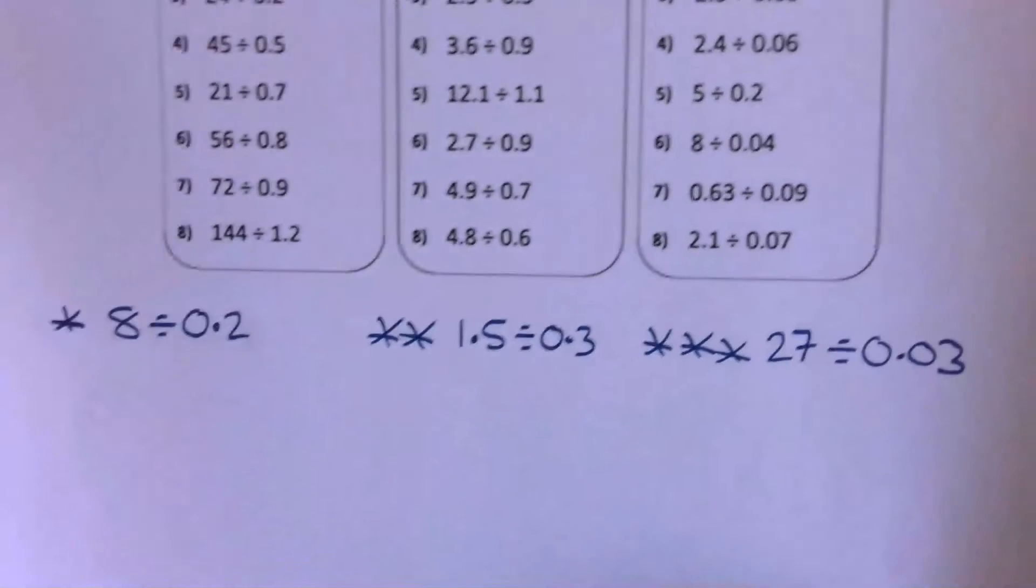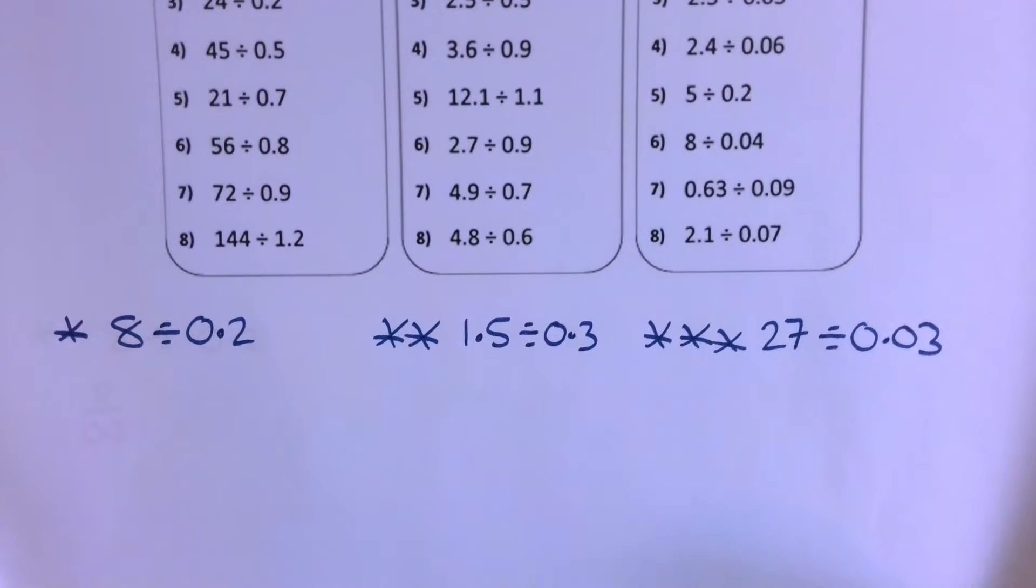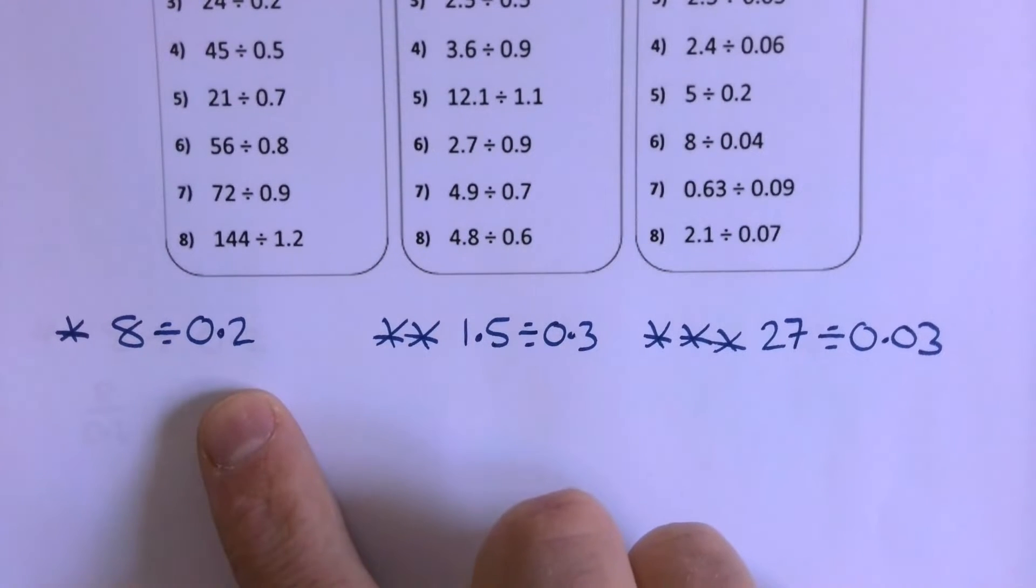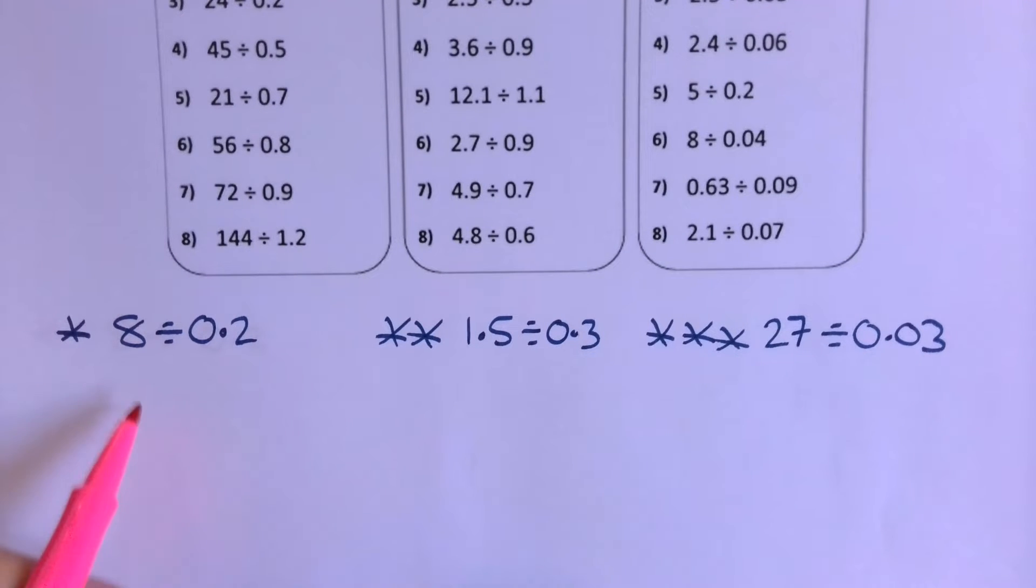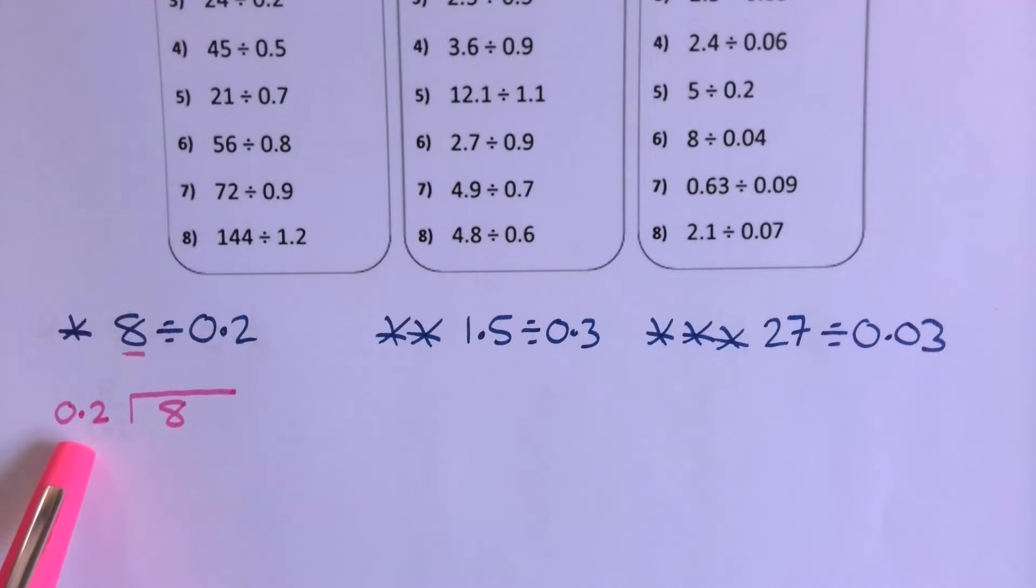So let's have a look at this then. First question is 8 divided by 0.2. Well, if I write this down as a bus stop, you'll see this is going to be quite a tricky thing. So here's my bus stop. I've got the first number to the bus stop gets a seat in the bus stop, and the second number sits outside. Now, what I'm being asked to do is how many 0.2s go into 8, and my 0.2 times table is literally rubbish. So we've got a problem there. So this is not what we are going to do.